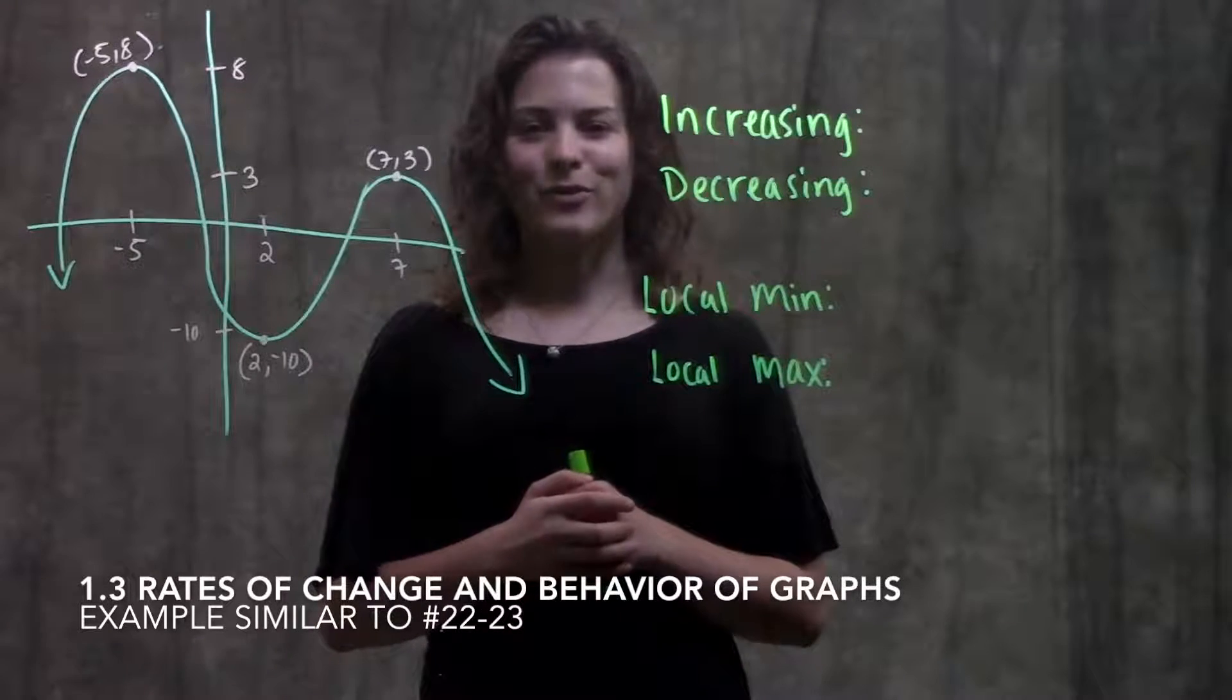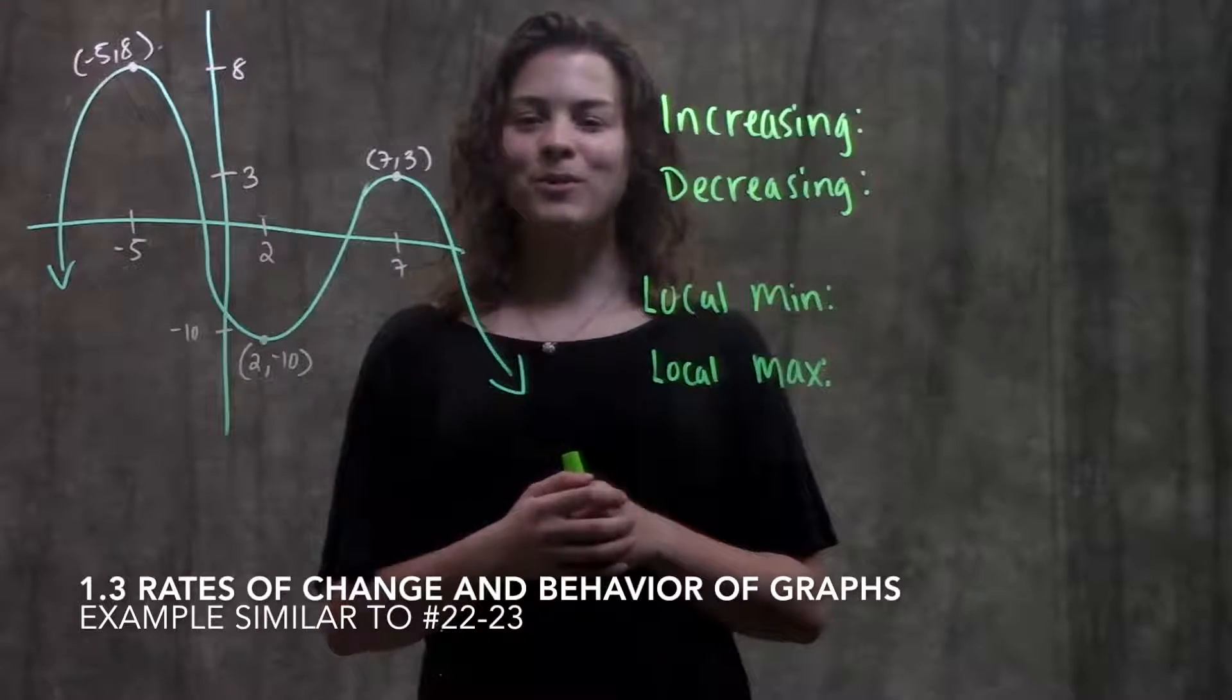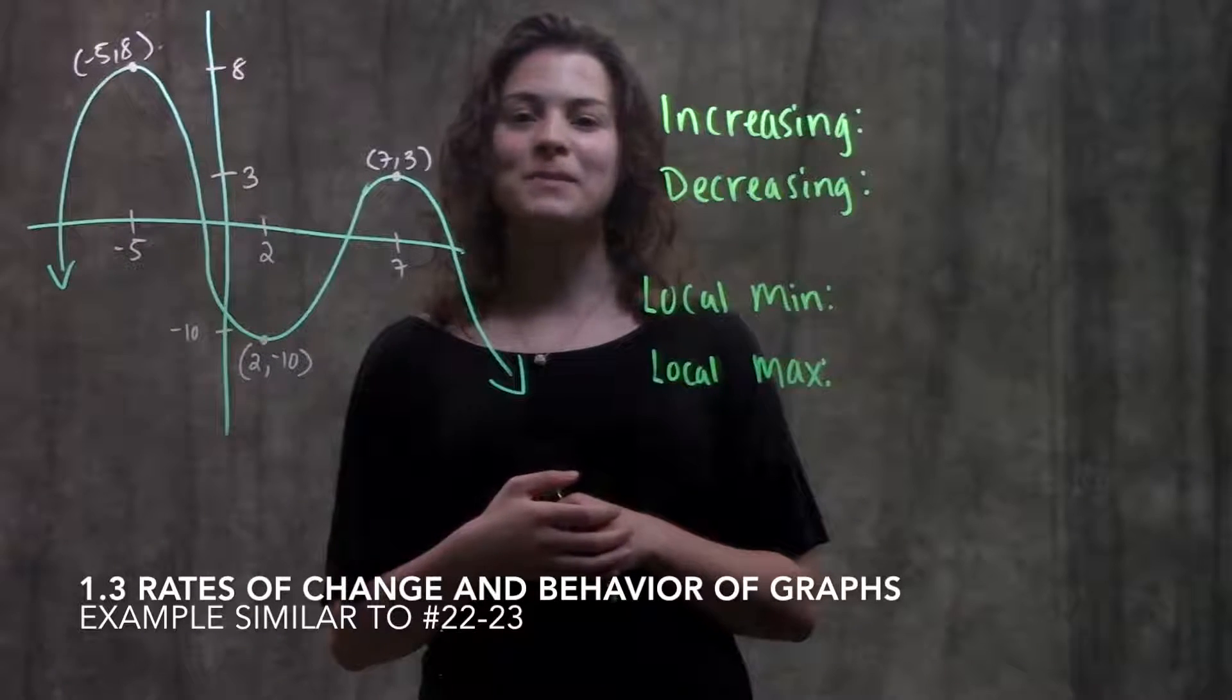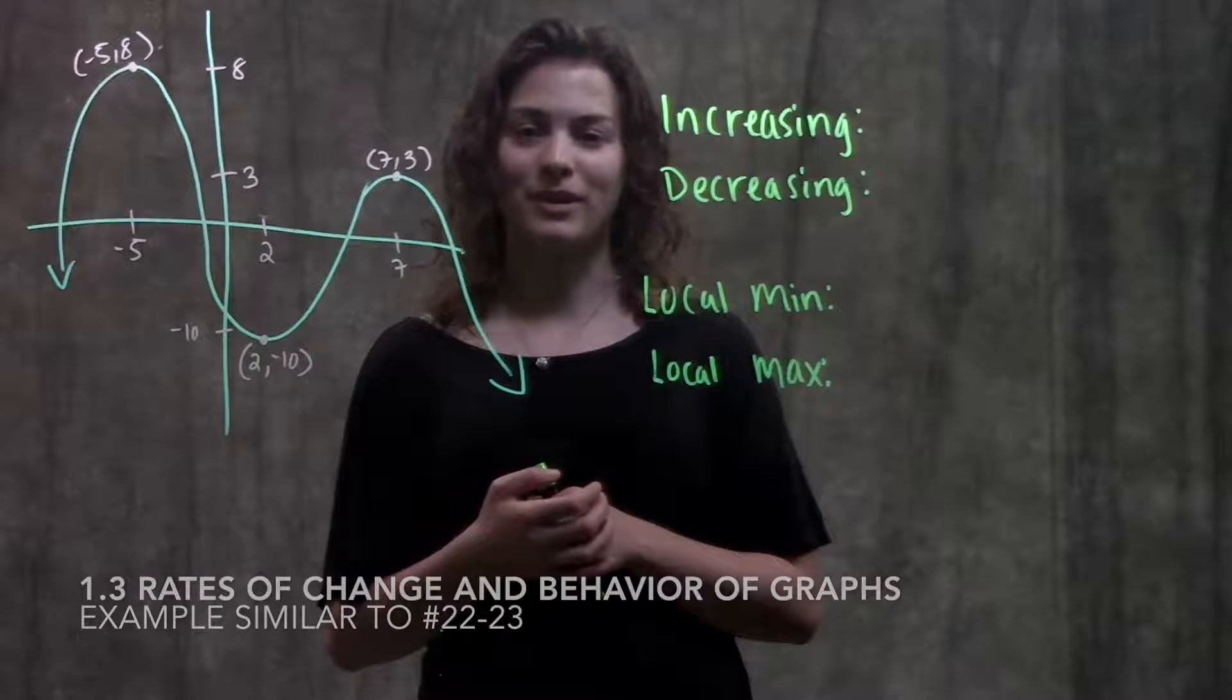This is section 1.3, average rate of change. In this video, we're going to go through an example problem that's really similar to numbers 22 and 23 in your book.